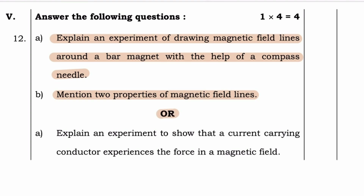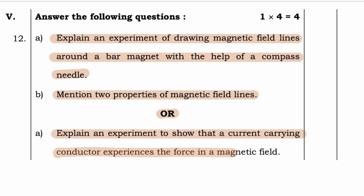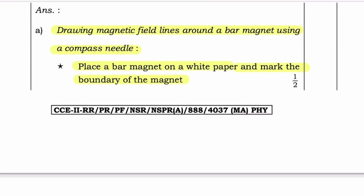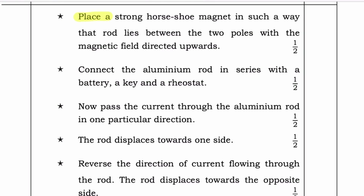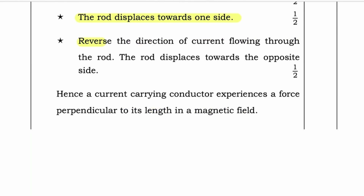There is an optional question. A: Explain an experiment to show that a current-carrying conductor experiences a force in the magnetic field. Answer: Take a small aluminum rod and suspend it horizontally using connecting wires. Place a strong horseshoe magnet such that the rod lies between the two poles with the magnetic field directed upwards. Connect the aluminum rod in series with a battery, a key and a rheostat. Now pass the current through the aluminum rod in one particular direction — the rod displaces towards one side. Reverse the direction of the current — the rod displaces towards the opposite side. Hence, a current-carrying conductor experiences a force perpendicular to its length in a magnetic field.